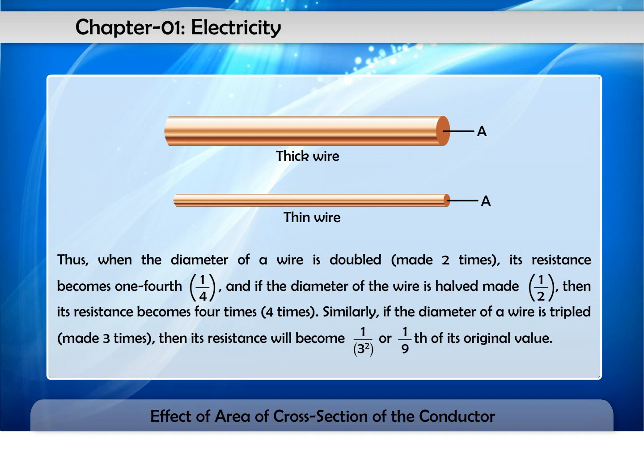And if the diameter of the wire is halved, made one upon two, then its resistance becomes four times, four times. Similarly,